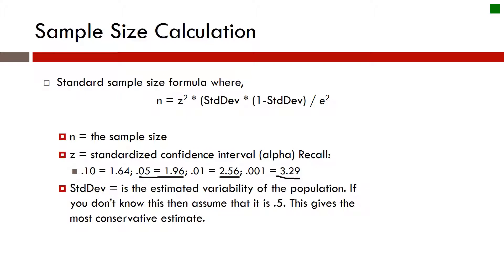The standard deviation here is some type of an estimate of variability that we have given the population. If you don't know what this is, and most of the time we don't, most of the time we do not know what this is in advance. But if you don't know what this is or you don't have prior data to give you this, then input 0.5.